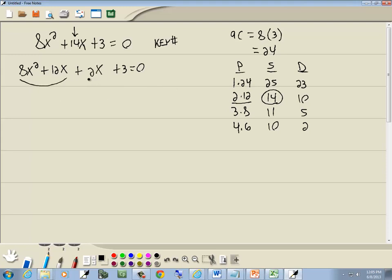Then we want to factor by grouping. Now, the first group has a 4x in common, so I can factor that out, and that gives us 2x plus 3. Now we always want to factor something out. So if you can factor nothing else out, factor out a 1, and that's what I'll do here. And that leaves us 2x plus 3.